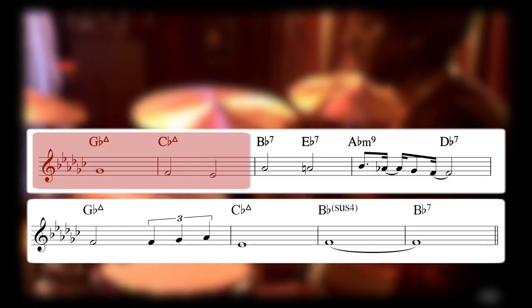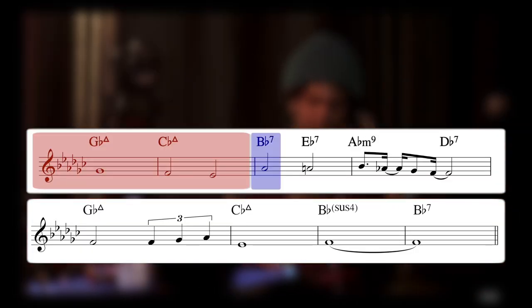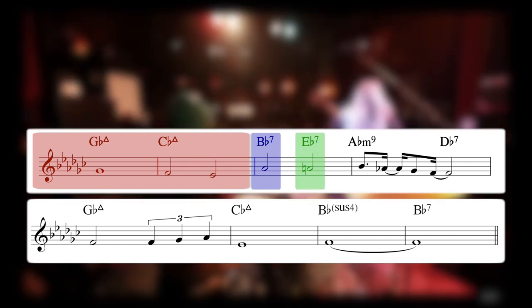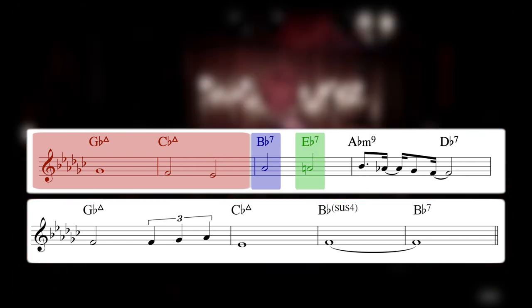The scales that you can use over this chord progression are G flat major over the first two bars, and then over B flat 7 you can use E flat harmonic minor scale. Over the E flat 7 you can use a half whole tone scale or diminished scale.